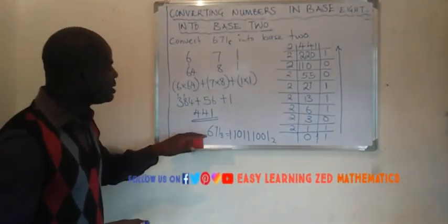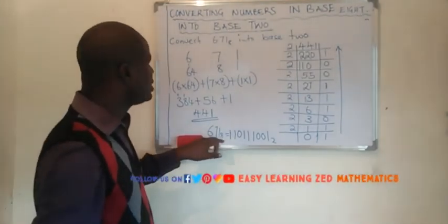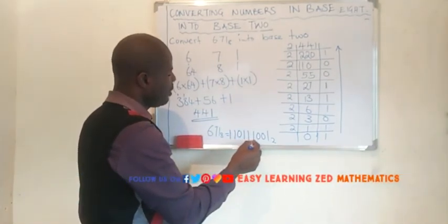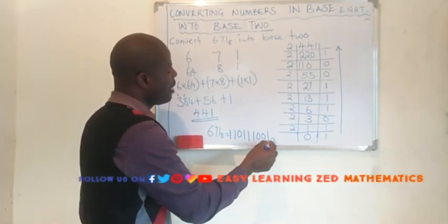Then in base 2. So we are saying 6, 7, 1 base 8 is equal to 1, 1, 0, 1, 1, 1, 0, 0, 1 base 2.